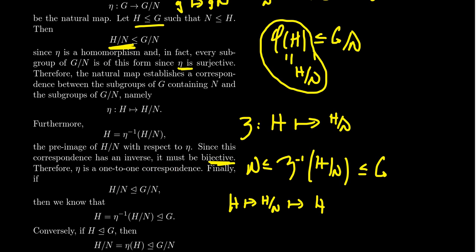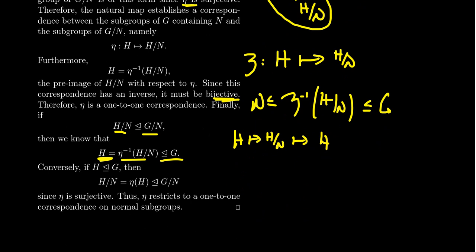Finally, if H mod N is normal inside G mod N, we have seen previously that preimages send normal subgroups to normal subgroups. So the preimage of H mod N has to be normal in G — but that preimage is H itself. So if H mod N is normal, then H will be normal. The other direction: if H is a normal subgroup of G, then H mod N (which is the image η(H)) will be normal inside G mod N — this follows from the fact that η is surjective.